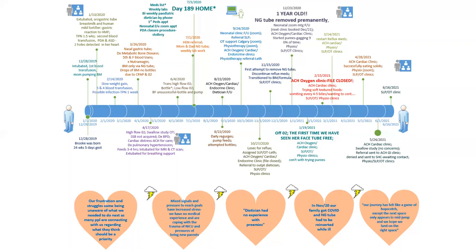Looking at this map, some of the things that came up were really about the siloed work and the poor communication between different service providers and teams. It was certainly clear about Jessica's frustration as she moved through the system trying to gain an understanding of how to adequately care for her daughter. The icons with multiple people indicate multiple teams throughout Jessica's journey, the lightning bolts indicate pain points, and the hearts capture Jessica's direct quotes from our interview.